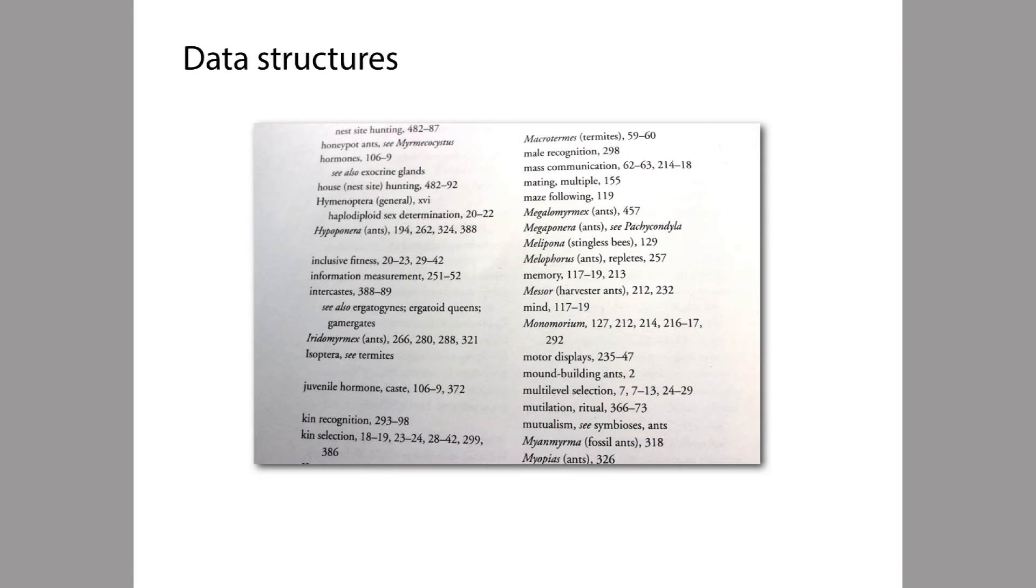So going back to our index analogy for a moment, let's say we're looking up a term in this index, the term memory. We flip to the exact middle of the index, and we find the key term that's there. Let's say the term directly in the middle is light. So light comes alphabetically before memory, so we know we can completely ignore the first half of the index up to and including the term light. Memory must be in the second half.